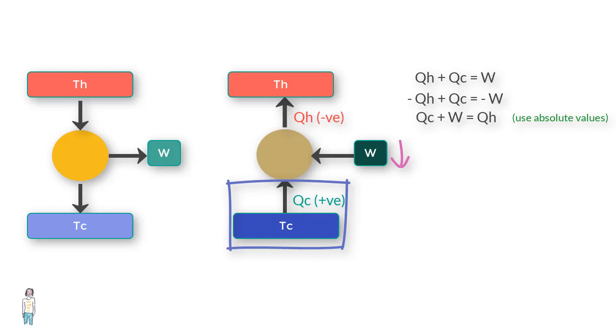We can say that the ratio QC upon W should be as high as possible for refrigerators. And this ratio is called the coefficient of performance of refrigerator and denoted by the symbol K.